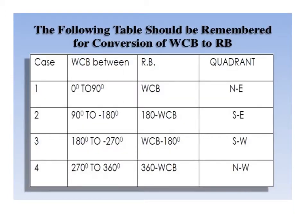This slide refers to conversion of WCB to reduced bearing. We have four cases depending upon the location of the line. Case 1: if the WCB is between 0 to 90 degrees, then reduced bearing is equal to WCB. Case 2: if the WCB is between 90 degrees to 180 degrees, then reduced bearing is equal to 180 minus WCB.